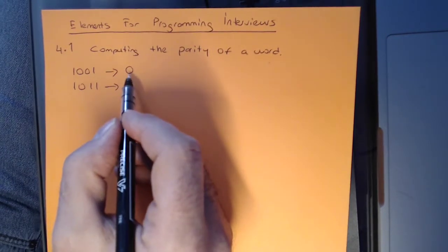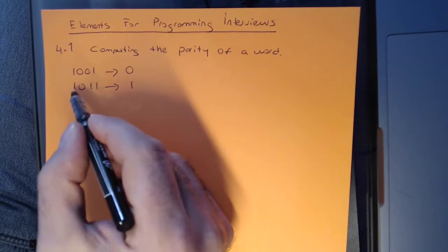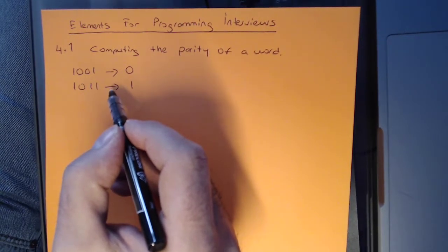Parity of a word is 0 if the number of set bits is equal to an even number. And parity of a binary word is 1 if the number of set bits is equal to an odd number.